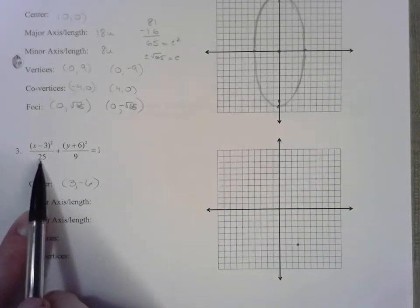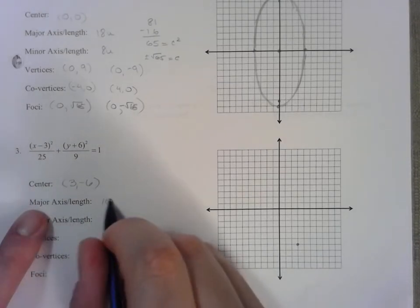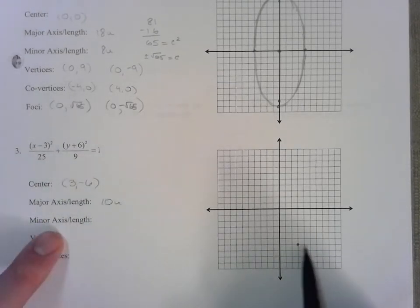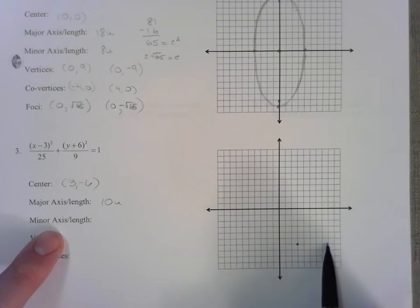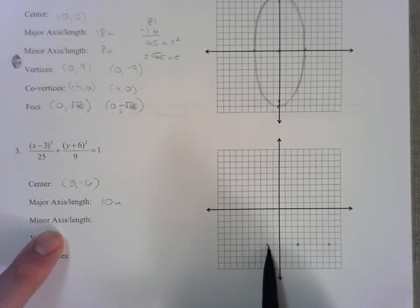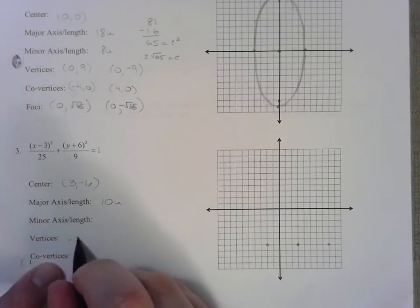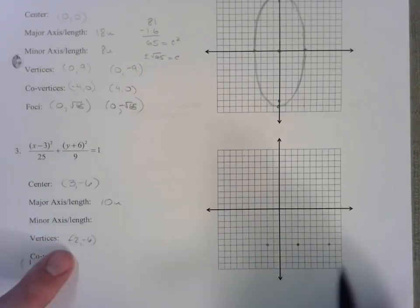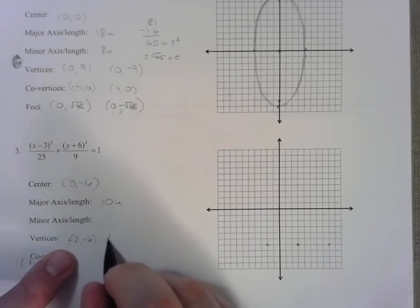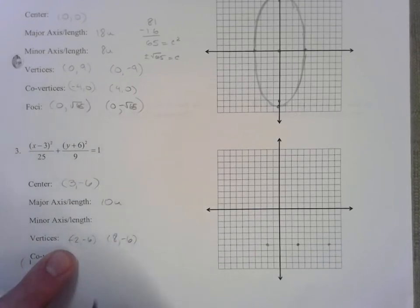It would be wider, 5 left and 5 right, 10 units. So if I go 5 right, 1, 2, 3, 4, 5. If I go 5 left, that looks like the point (-2,-6). And this would be (8,-6). And that's just the same thing as if I add subtract 5 from the x coordinate.